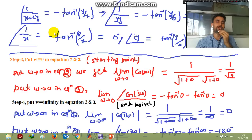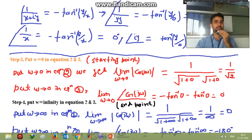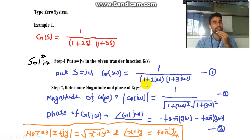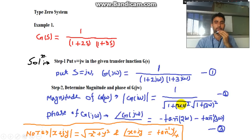tan⁻¹(∞) equals 90°. For 1/x in the denominator, it becomes minus tan⁻¹(0/x) = 0°. If only imaginary part is on numerator, it becomes tan⁻¹(y/0) = 90°. Applying this to our equation: since each factor (1 + 2jω) and (1 + 3jω) is of the form x + jy in the denominator, the magnitude is √(1² + (2ω)²) × √(1² + (3ω)²) in the denominator, and the phase becomes minus tan⁻¹(2ω/1) minus tan⁻¹(3ω/1), giving Equation 2 and Equation 3.